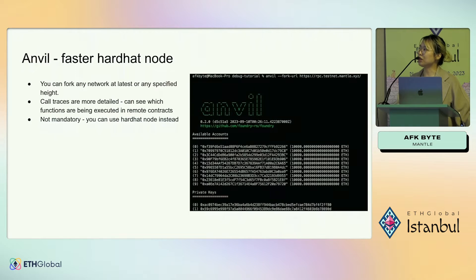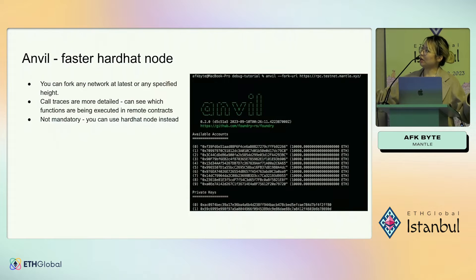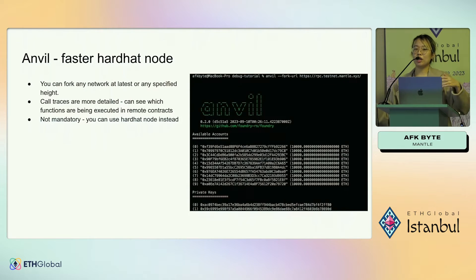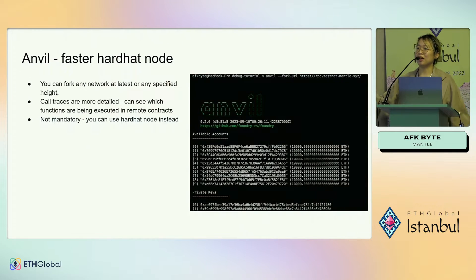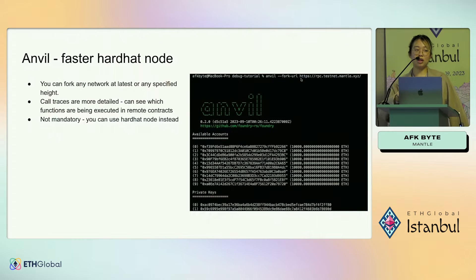I highly recommend Forge over Hardhat. Anvil is basically just a faster hardhat node. You can fork any network at its latest state or at any specified block height. So if you've deployed your contract on mainnet or on Mantle and you get an error, you can actually fork the local state of the network. The instruction is 'anvil --fork-url' followed by an RPC URL, and you can fork the state of that network.